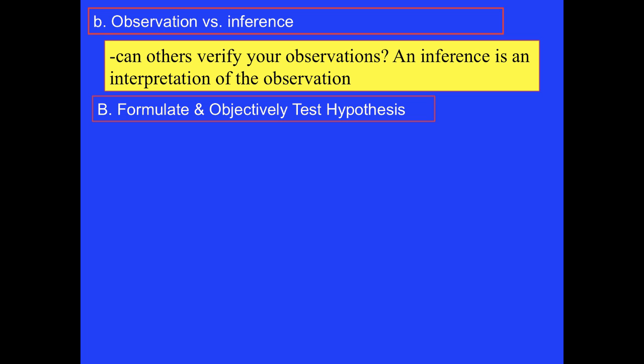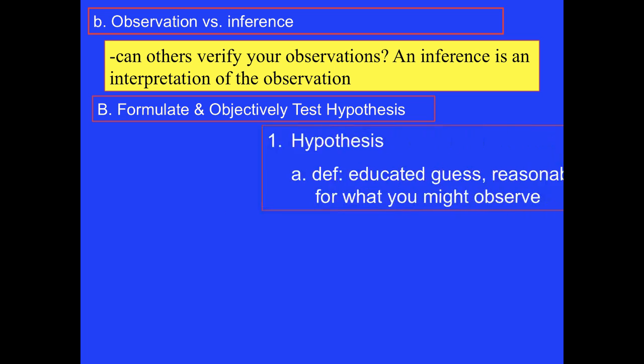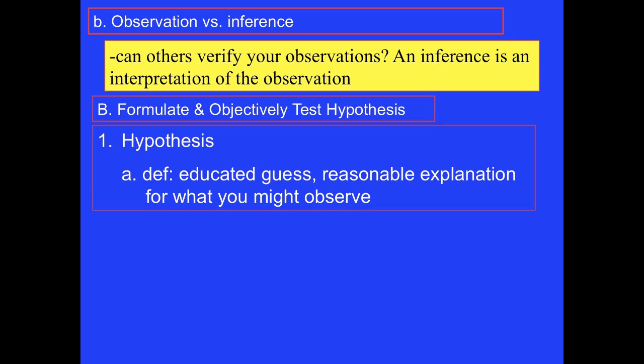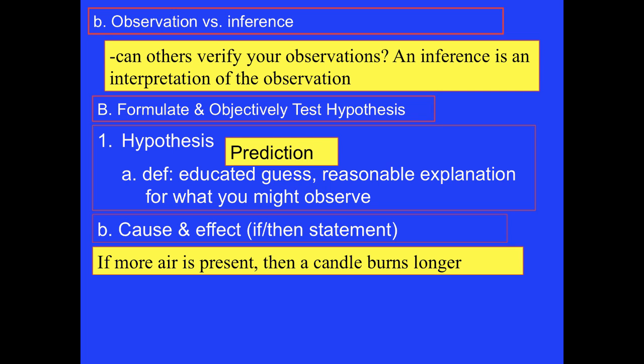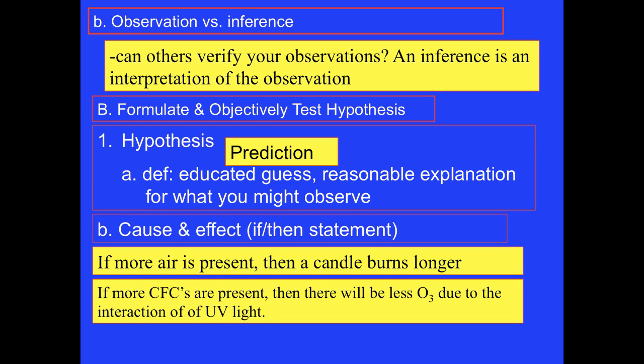Hypotheses are also an important part of experimenting. A hypothesis is a reasonable prediction about the results expected in an experiment. We formulate a testable hypothesis based on what we know before an experiment begins. A hypothesis is usually written in the if-then form. In terms of the candle lab, it might be something like, if more air is present, then a candle burns longer. Or, going back to the ozone and CFCs, if more CFCs are present, then there will be less ozone in the atmosphere. Remember, a hypothesis must also be testable.